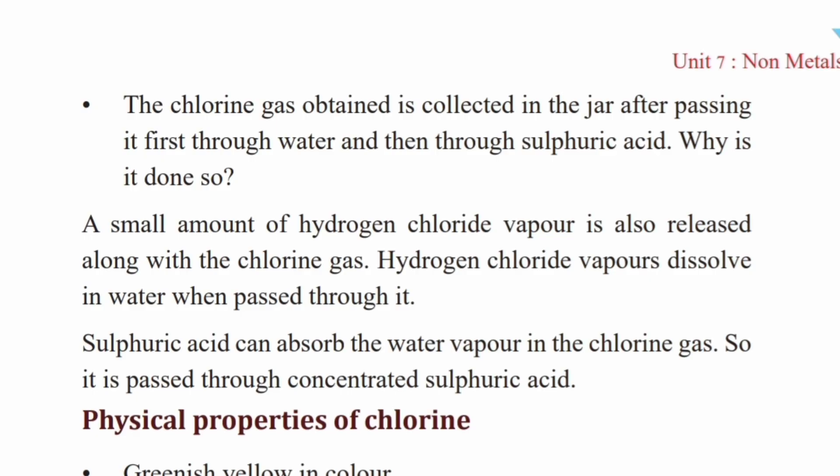The chlorine gas obtained is collected in a jar after passing it first through water and then through concentrated sulfuric acid. Why is it done so?